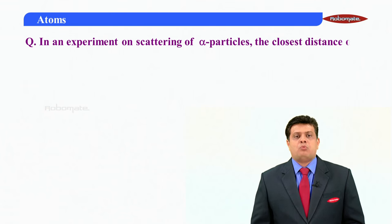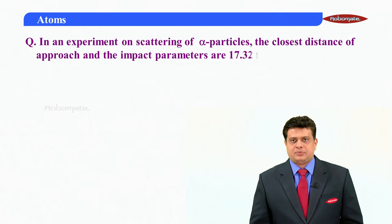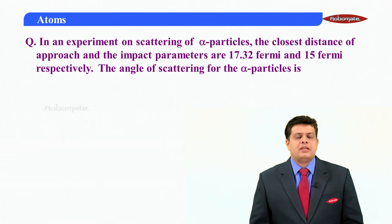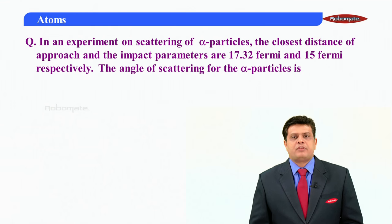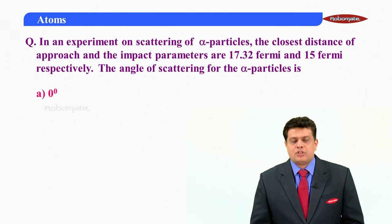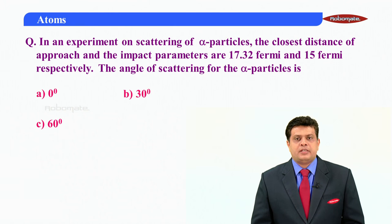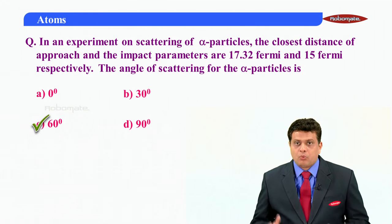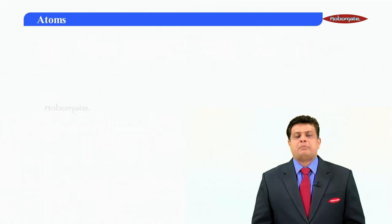Let me take one of the questions just to tell what exactly the questions are asked. In experiment on scattering of alpha particles, distance of closer approach impact parameter are 17.32 Fermi and 15 Fermi respectively, the angle of scattering for the alpha particle is. The answers are 0 degree, 30 degree, 60 degree and 90 degree and right answer is 60 degree. Why it's so? I want to know that.